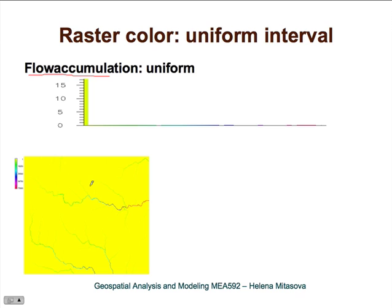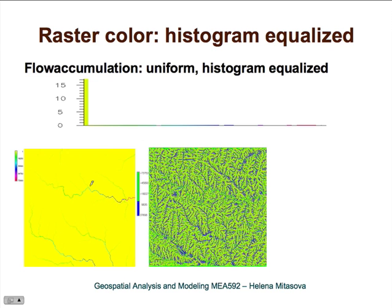Let's try histogram equalization. You can see a much richer structure here. However, this may be more than we want because we can no longer distinguish the major rivers very well. For some applications, this may really be too much information that the histogram equalized color table pulled out.